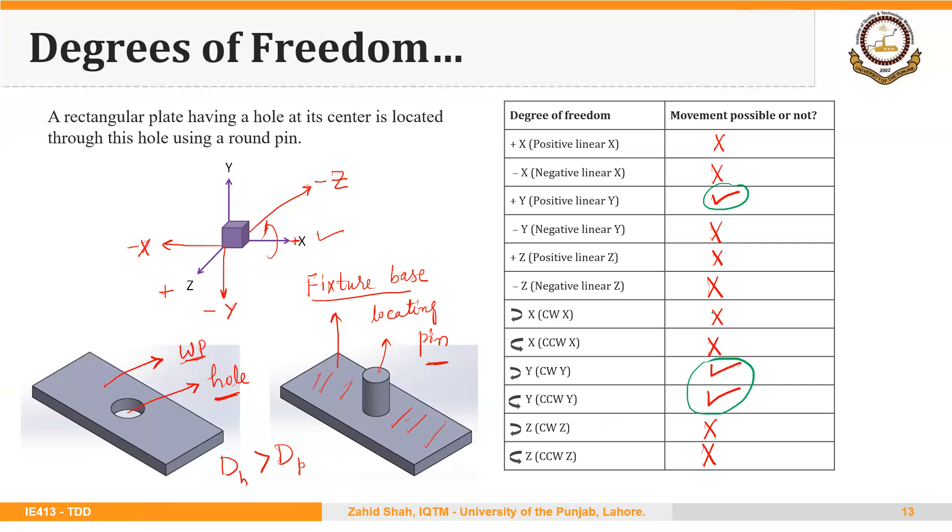Remember that if there was an interference fit between this hole and pin—which is not recommended because it makes removal difficult—then all 12 degrees of freedom would have been restricted, as we saw with template jigs.